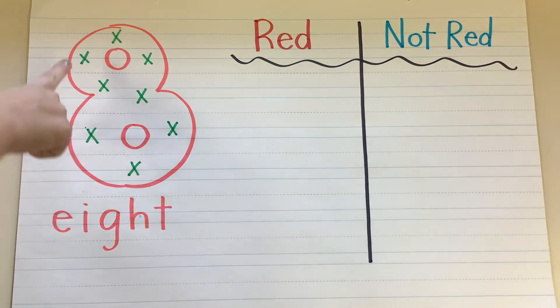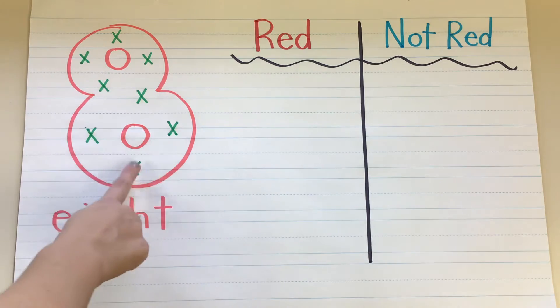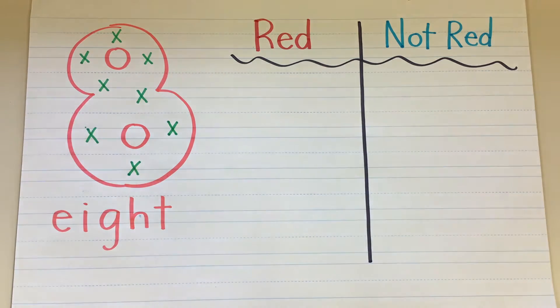Let's count those again. 1, 2, 3, 4, 5, 6, 7, 8. Today's number of the day is 8. We've been practicing sorting and we know that we can sort by color, we can sort by shape, we can sort by food or not food or goes in the sky or goes on the ground.